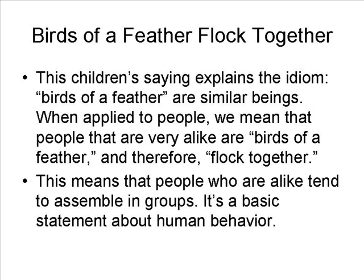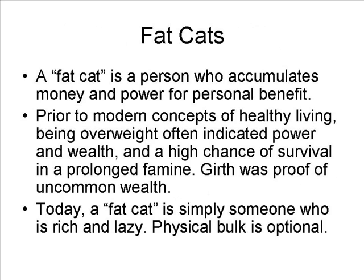Just using animals — like flocks, groups of birds — as an example of human behavior. For our next example, we simply have fat cats. A fat cat is a person who accumulates and gathers money and power for personal benefit. Before we had modern concepts of health food and exercise, being overweight often indicated power and wealth, and a chance of survival in a prolonged famine where people are starving.